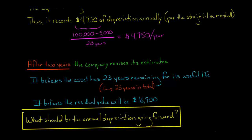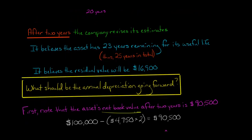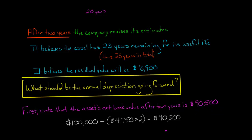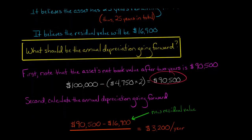So what is going to be the annual depreciation going forward? First, the net book value of the asset after two years is $90,500. The initial cost of the asset was $100,000. The annual depreciation before the revisions was $4,750. Two years had passed, so they'd already taken this depreciation twice — $4,750 times two is $9,500. So $100,000 minus $9,500 is $90,500. That is the net book value at the end of year two.